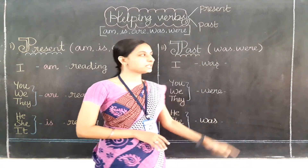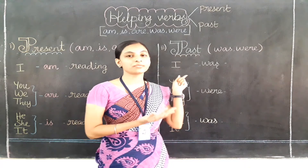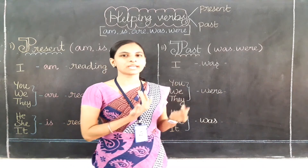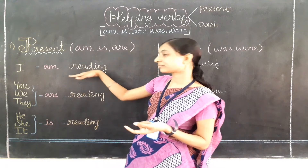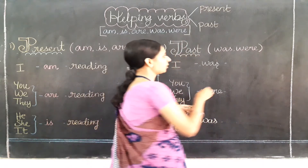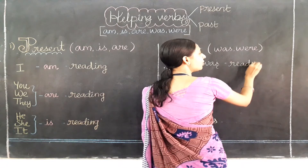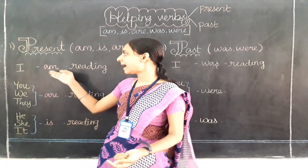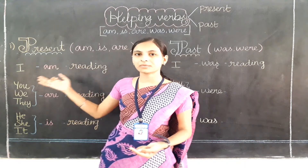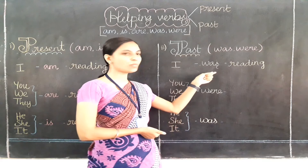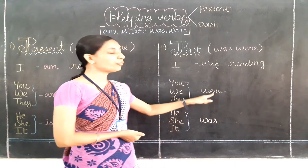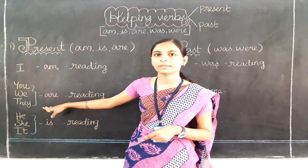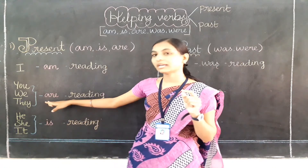Now let's learn about the past: was and were are the words that tell the past time. For 'am' — which is the present — the past tense will be 'was': I was reading. For 'are' — the present verb — the past will be 'were'. For 'is', the past will also be 'was'. Whenever we use helping verbs, we still need to add -ing to the main verb.